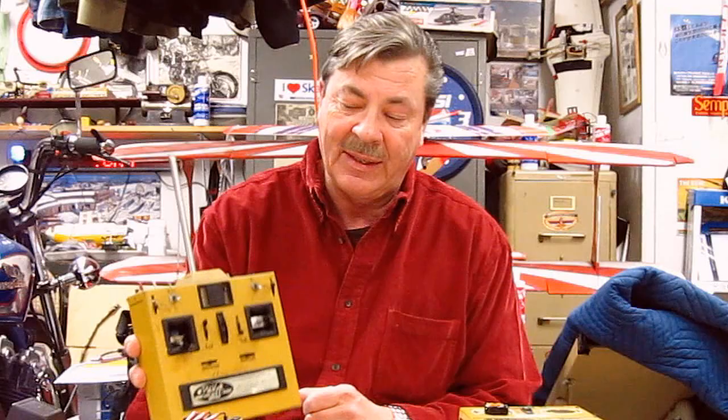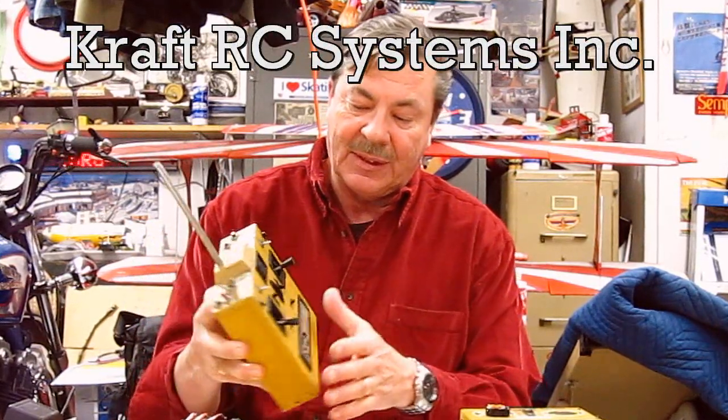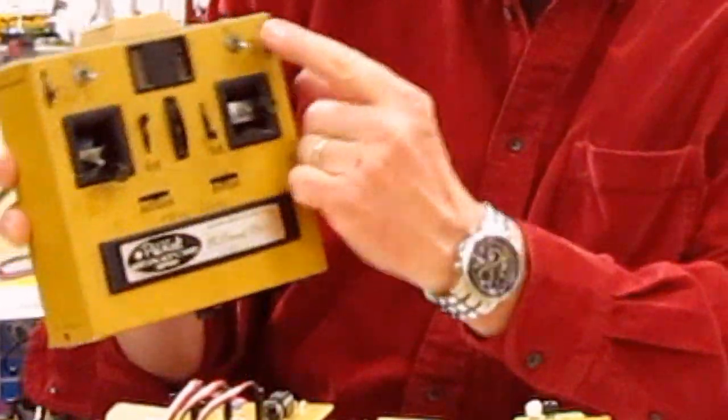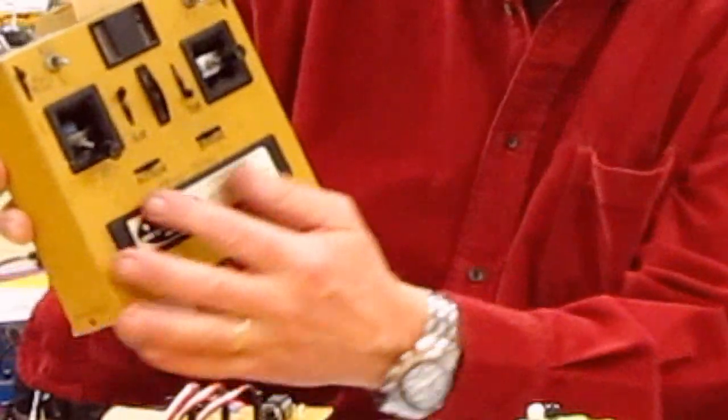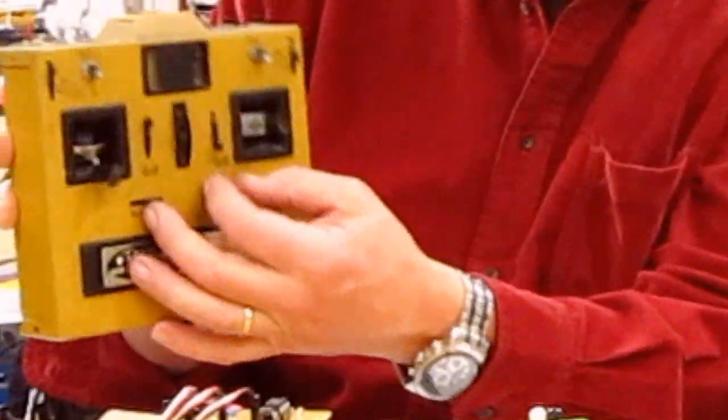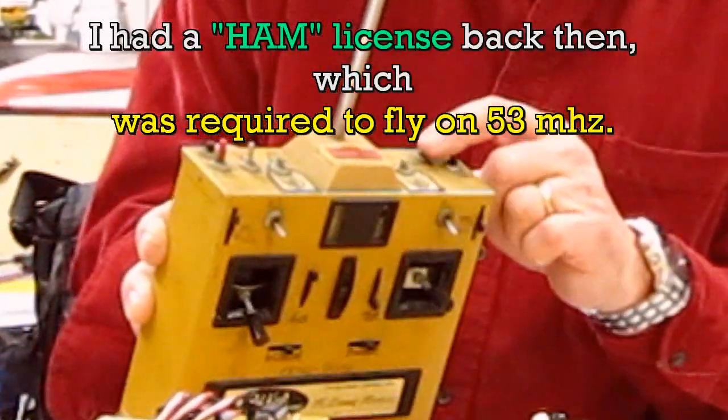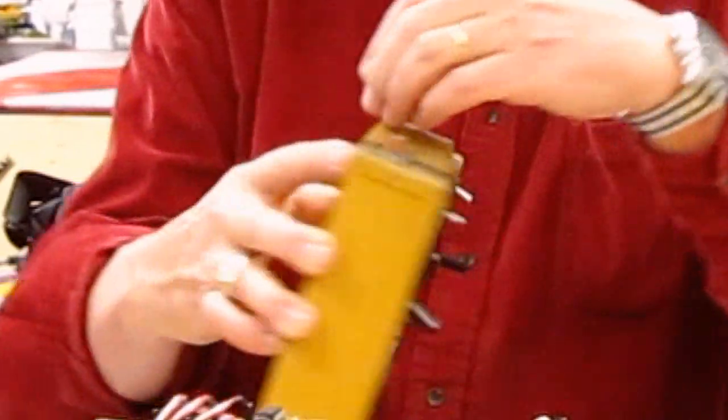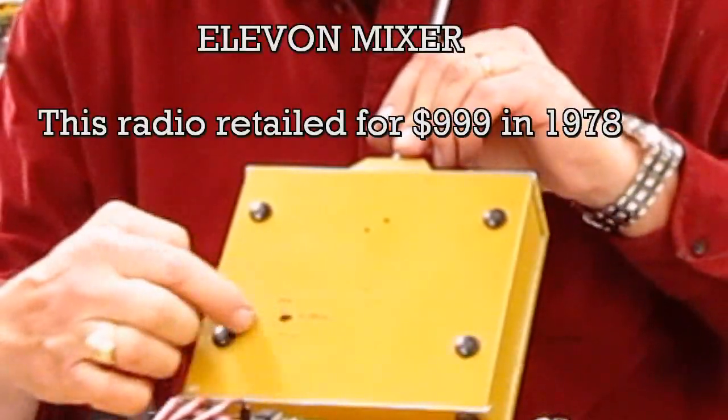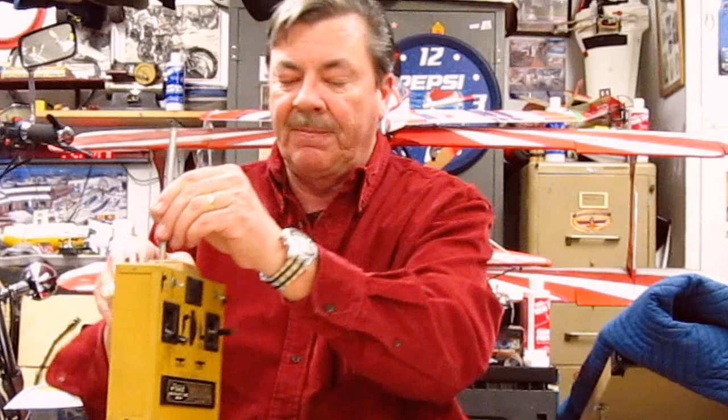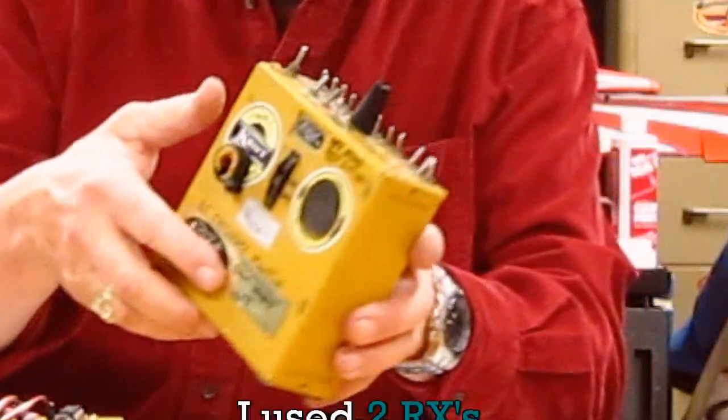I worked at the first radio control company in America and built my own signature series radio with cross trims, throttle trim, elevator trim, roll button, snap roll button, dual rates, built-in mixer, and removable frequency modules. This is from back in the early 70s. Something else I did while working in electronics - I built my own frequency monitor.